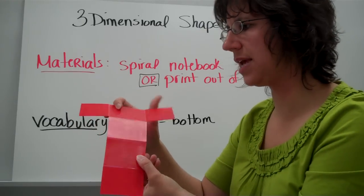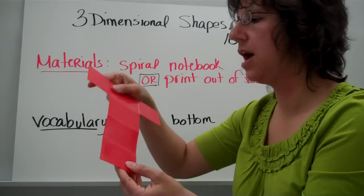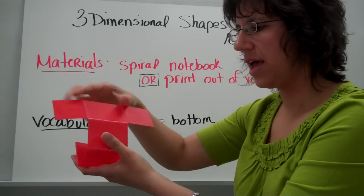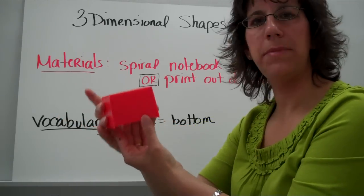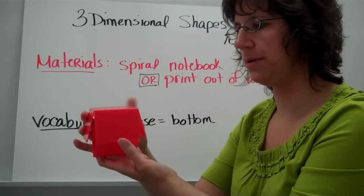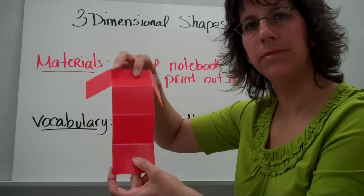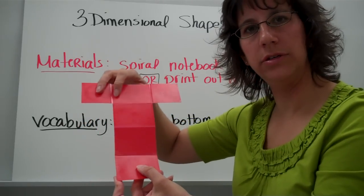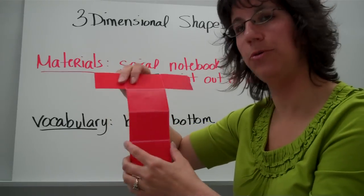A net is what you can take, a pattern of sorts, a pattern that you can take and cut out and fold up to make your three-dimensional shape. All three-dimensional shapes can be flattened out, and you can have a pattern to cut it out and then make that three-dimensional shape.